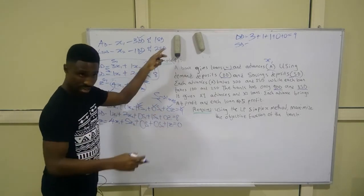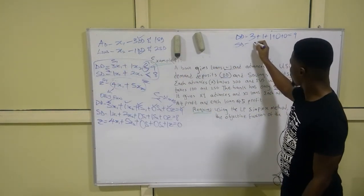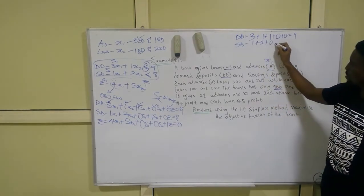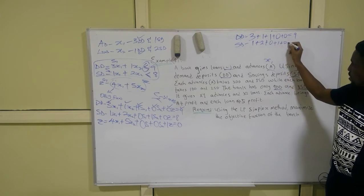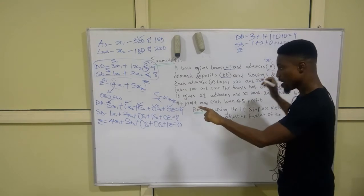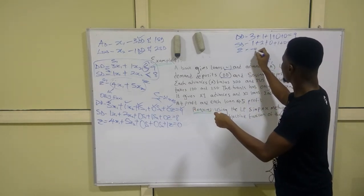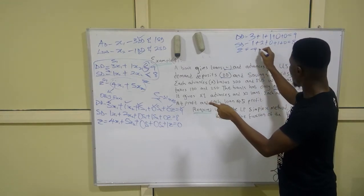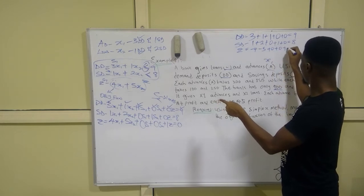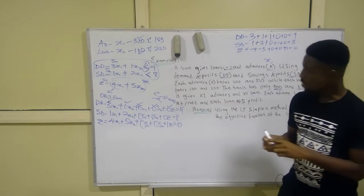For the objective function row (z), it gets tricky: it becomes −4, −5, 0, 0, 1 = 0. The values become negative for the profit coefficients.